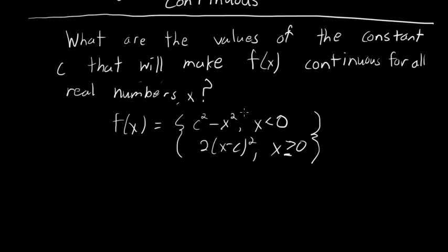Let's consider these separate chunks. For x less than 0, we're dealing with the polynomial function c squared minus x squared. Regardless of what c is, this will still be a polynomial function in the form of some constant minus x squared. And that's going to be continuous for all x, so it's certainly going to be continuous for negative numbers.